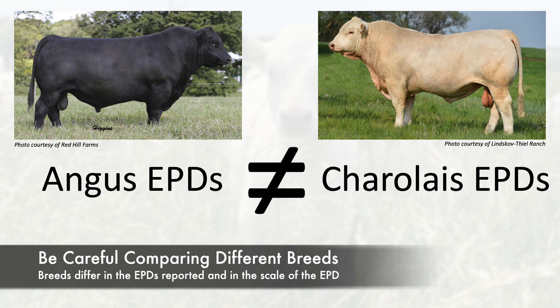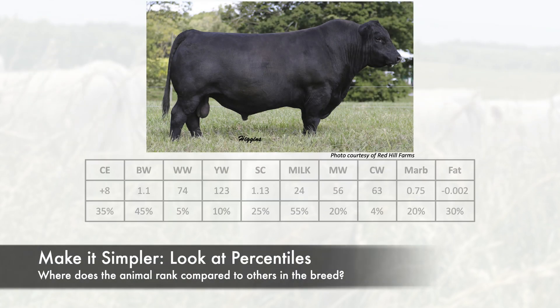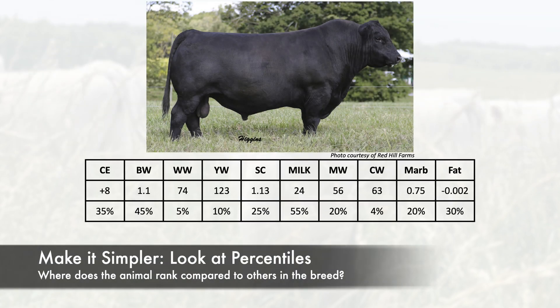Here's a tip to make it simpler. Regardless of the breed, focus on where that EPD value ranks on a percentile basis. This lets us understand where the bull ranks for an EPD compared to all the other members of his breed. For example, currently if an Angus bull has a weaning weight EPD of 74 from the Angus Association, he'd be in the fifth percentile for the entire Angus breed — meaning he's in the top 5% of all Angus bulls for weaning weight.